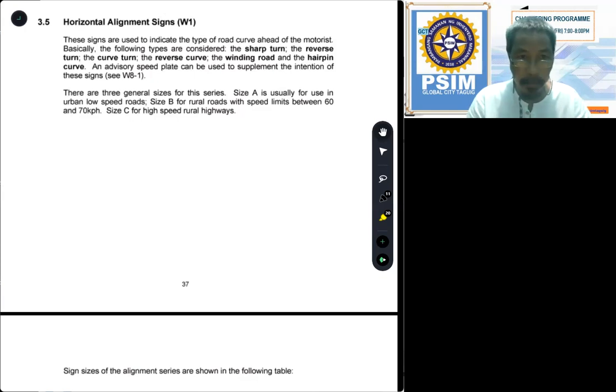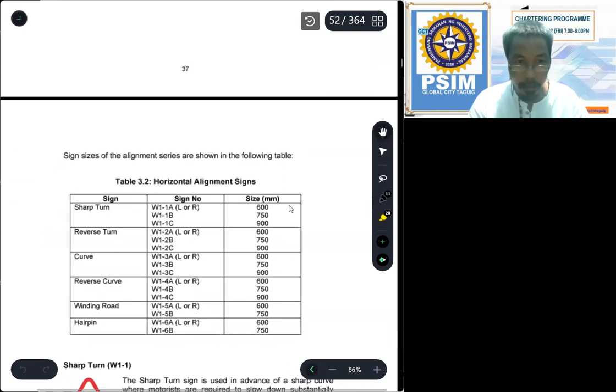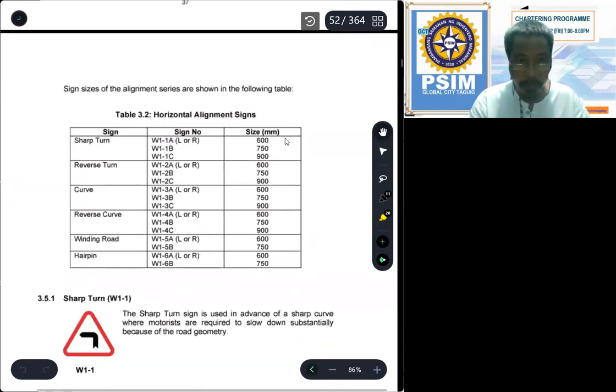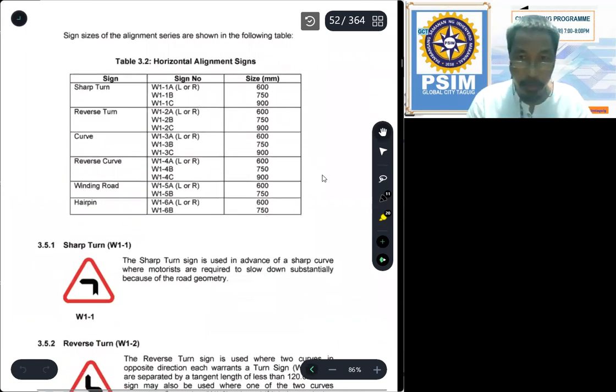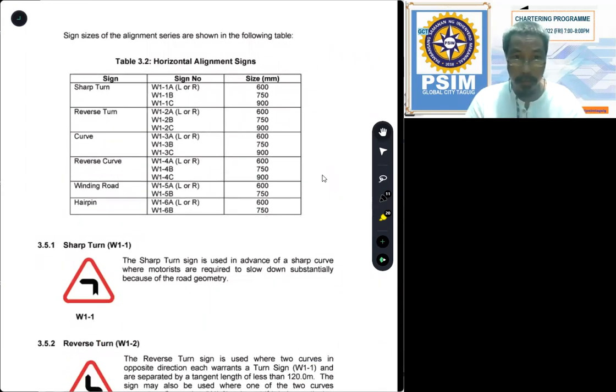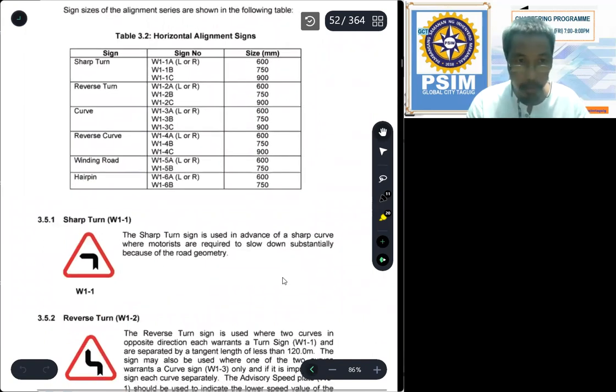There are three general sizes for the series: type size A, size B, and size C. And we have the following sizes in terms of millimeters: 600, 750, and 900. So those are the sizes A, B, and C respectively. Sharp turn, reverse turn, curve, reverse curve, winding road.